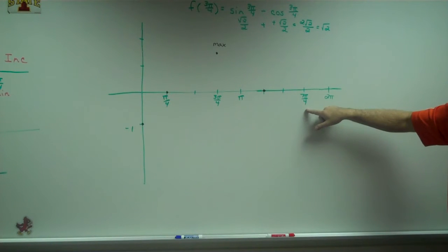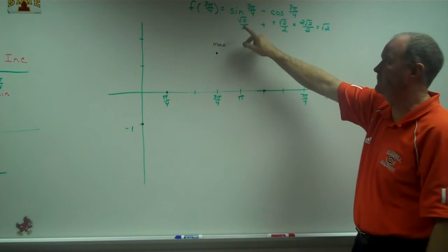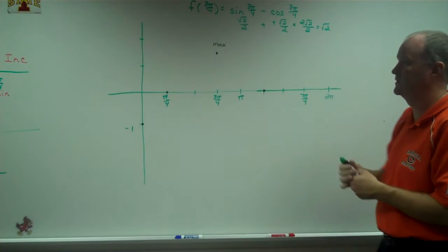Then I've got to do 7π over 4. Really going to be the same numbers, right? Except the sine of 7π over 4 is going to be...